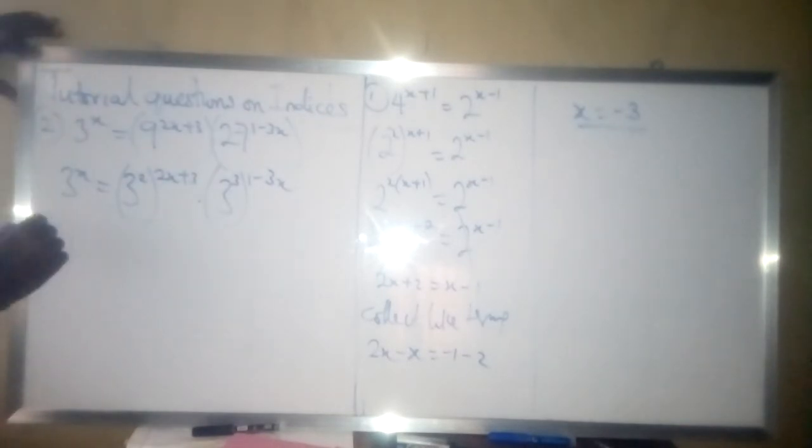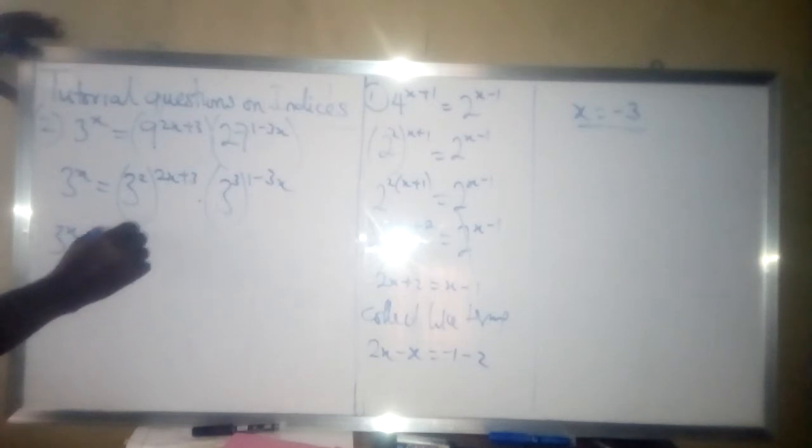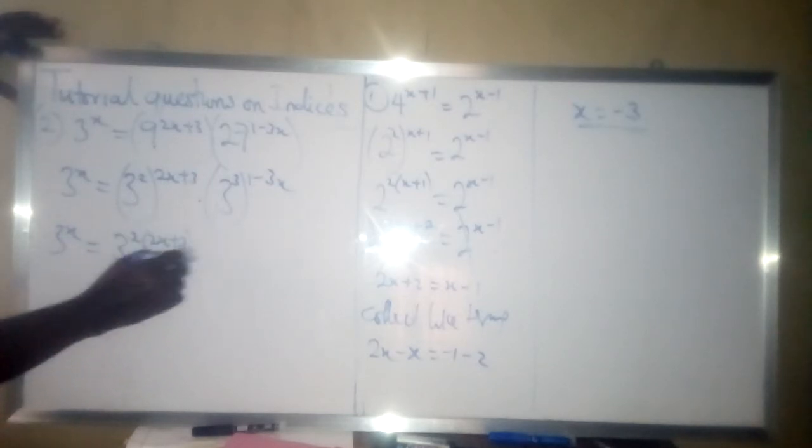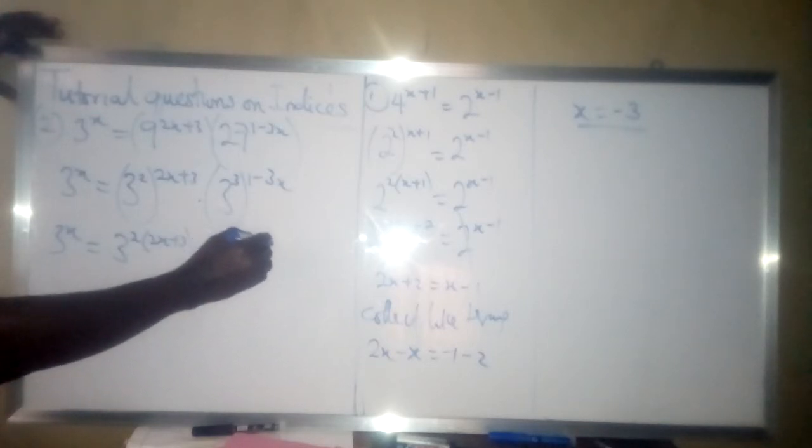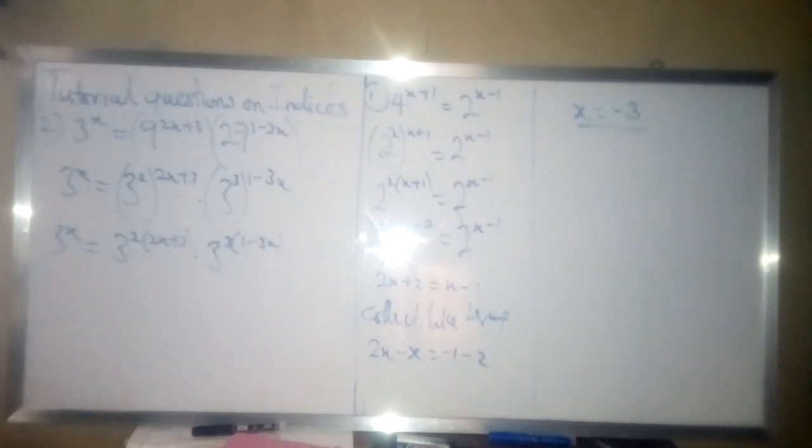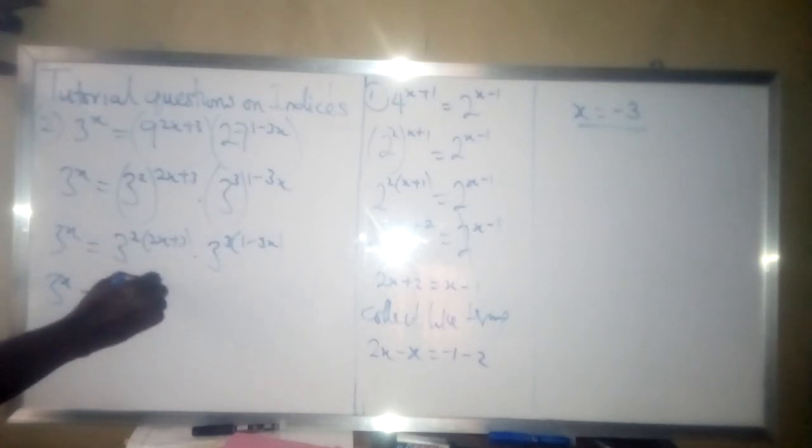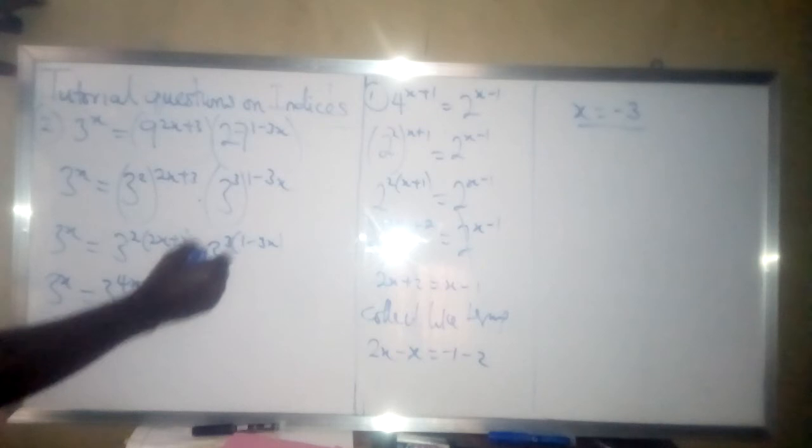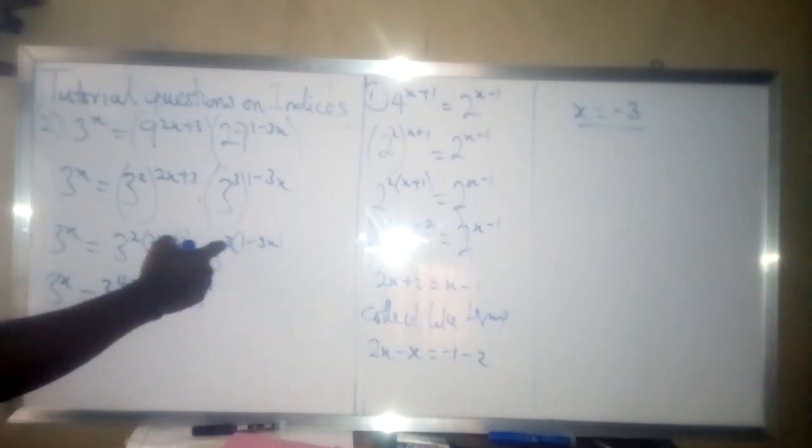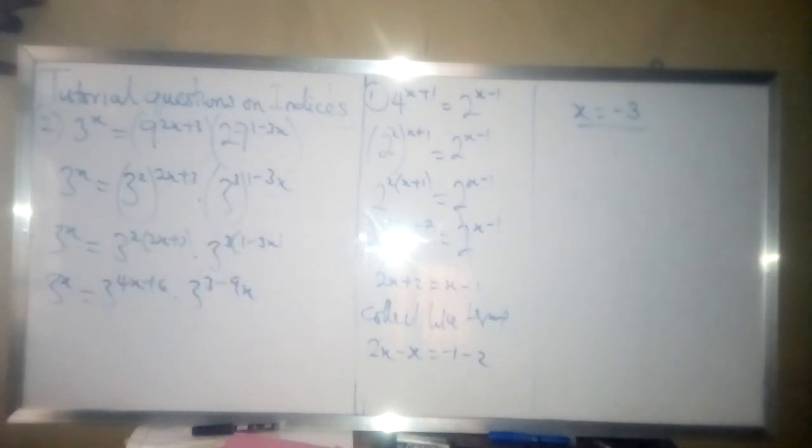So we have here 3 raised to power x is equal to, now we expand the bracket here: 3 into 2 into 2x plus 3. Then we are multiplying it with 3 into 3 into 1 minus 3x. That is that. So we are multiplying this by this. So in that case, now pick one of the integer 3 according to the law of indices.